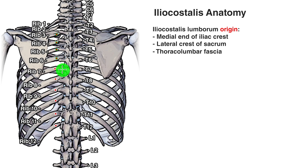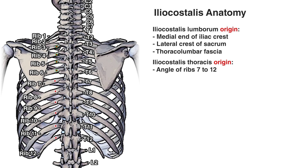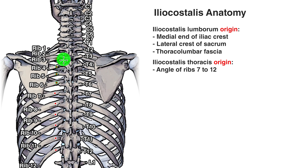Moving on to the origins of the iliocostalis thoracis section — you can see them marked in red with a white outline. The iliocostalis thoracis originates on the angle of the lower six ribs. The angle of the rib is the part where it transitions from a relatively straight section to a more distinct curvature or bend. Lastly, the cervicis section origins are shown with a green outline, and it also originates on the angle of the ribs — specifically ribs three, four, five and six.